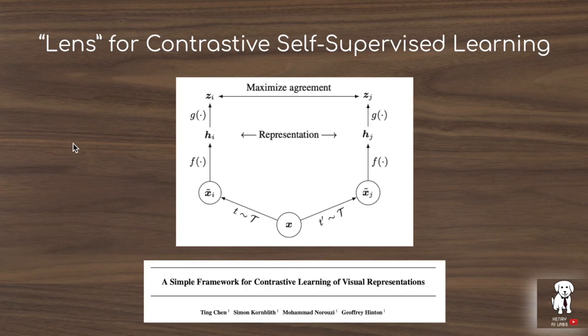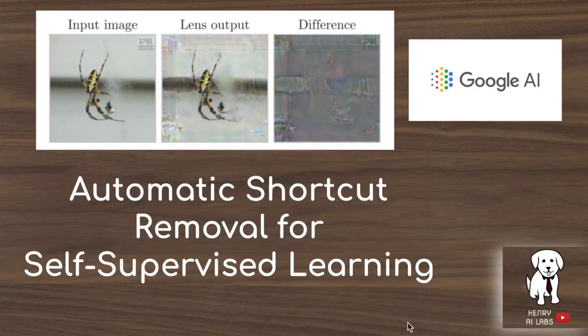Even supervised learning has been done with the ADVPROP algorithm, and there are all sorts of ways to stack adversarial image-to-image translation for data augmentation on various tasks. Thanks for watching this explanation of the lens automatic shortcut removal technique — a really interesting strategy of using image-to-image translation to preprocess images and make self-supervised learning tasks more difficult. By making tasks like rotation prediction or colorization harder, the network must learn more semantic representations useful for downstream transfer, enabling massive unlabeled datasets to learn better representations for computer vision problems. Please subscribe to Henry AI Labs for more deep learning and AI videos.